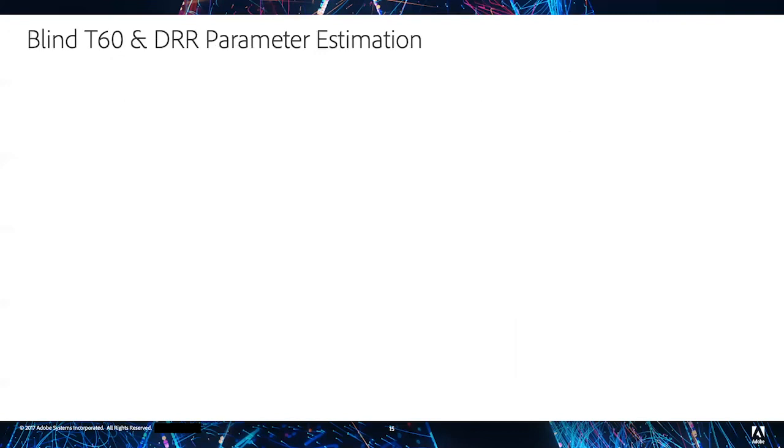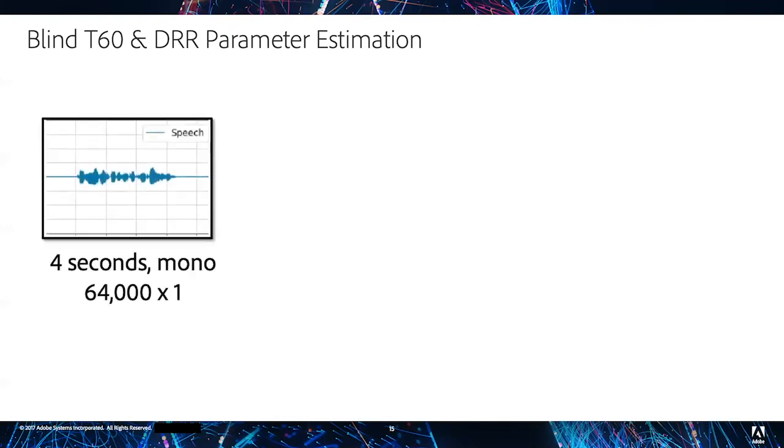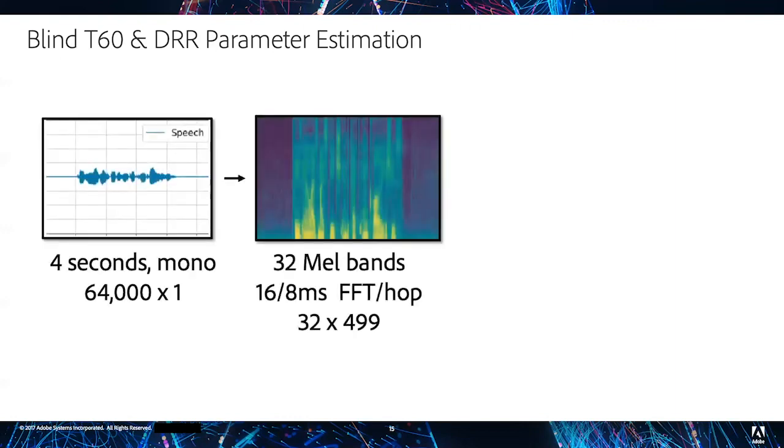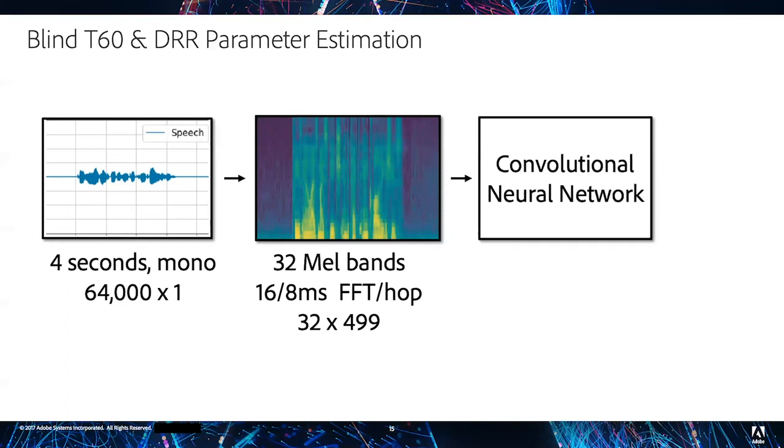So once we have our new data set with well-balanced IRs, we can build a predictor. In our case, we input four seconds of speech, compute a basic mel spectrogram representation, and then compute a convolutional neural network to output scalar T60 or DRR values.